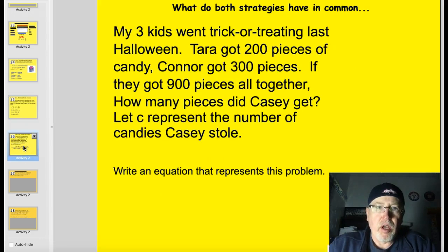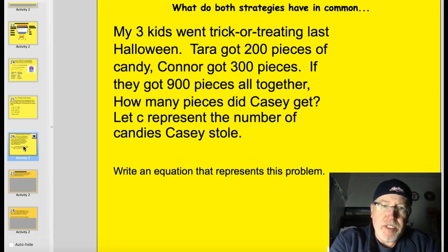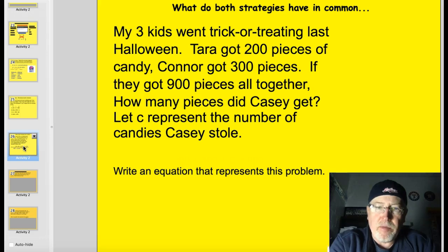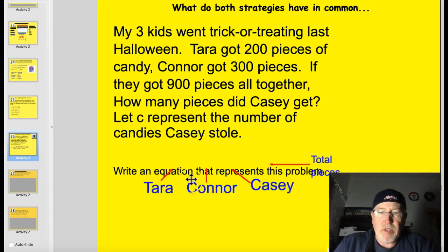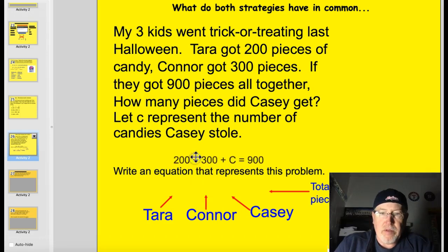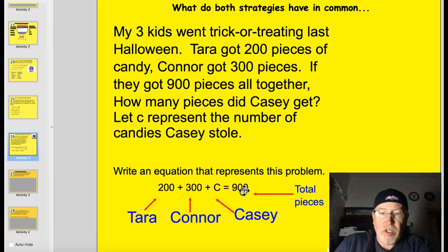Let's take a look at this next problem here. My three kids went trick-or-treating last Halloween. Tara got 200 pieces of candy, Connor got 300 pieces. If they got 900 pieces altogether, how many pieces did Casey get? Let's see, represent the number of pieces of candy Casey stole, I mean Casey got. I think what's important on both strategies one and two is to make sure I'm labeling some stuff. So this time, I'm just going to try to label some stuff on my own. I know that Tara got a couple hundred pieces of candy. Tara got 200 pieces of candy, Connor got 300, Casey got some c candies, and all together, they got this many. They got 900. So I've gone through and I've labeled it. I was able to get it solved that way.